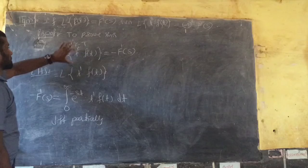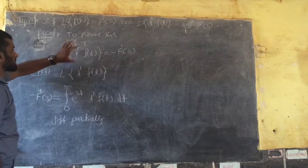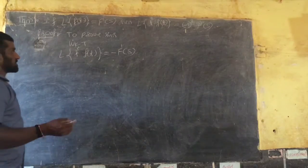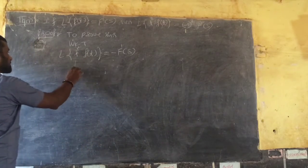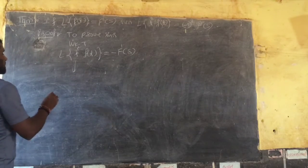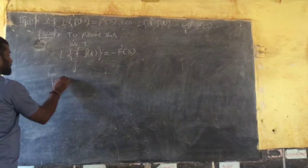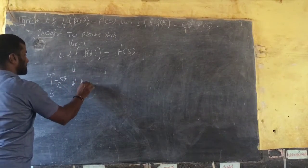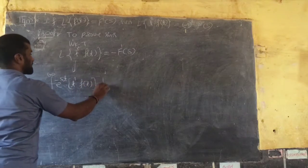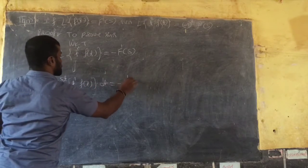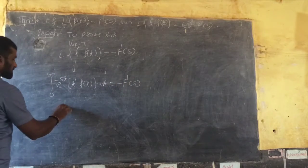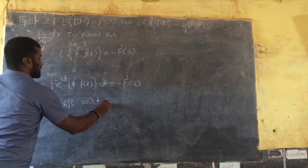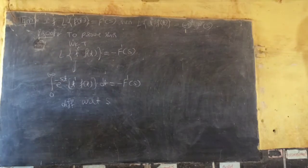Expressing in terms of t symbolically, using the definition of Laplace directly: from 0 to infinity, e to the power minus st, into t · f(t), dt equals minus F dash of s. Now differentiate partially with respect to s on both sides, because there are two variables, so we use partial derivatives.